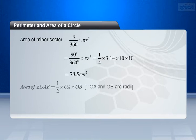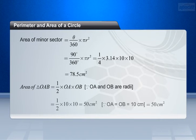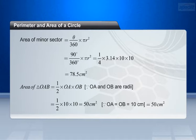Area of triangle OAB equals 1 by 2 into OA into OB, since OA and OB are the radii of the circle. This is equal to 1 by 2 into 10 into 10, since OA equals OB equals 10 cm. This is equal to 50 cm square.